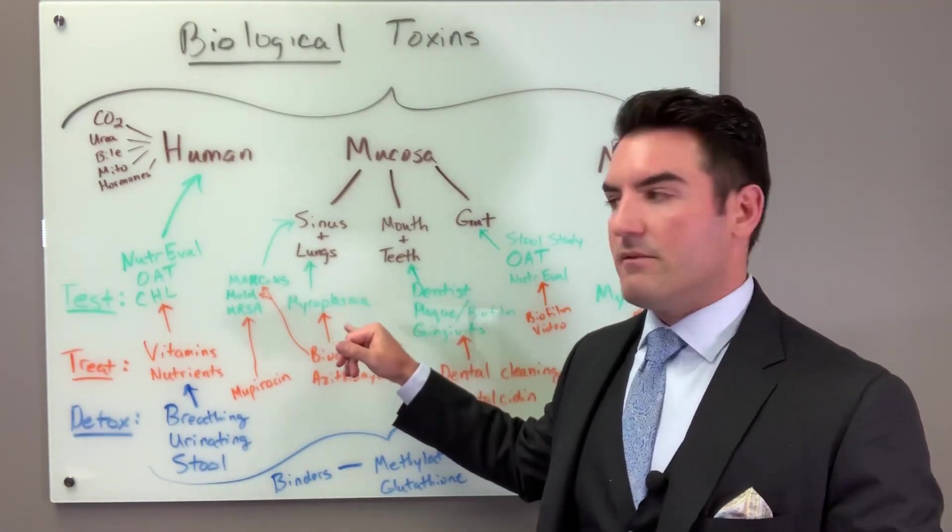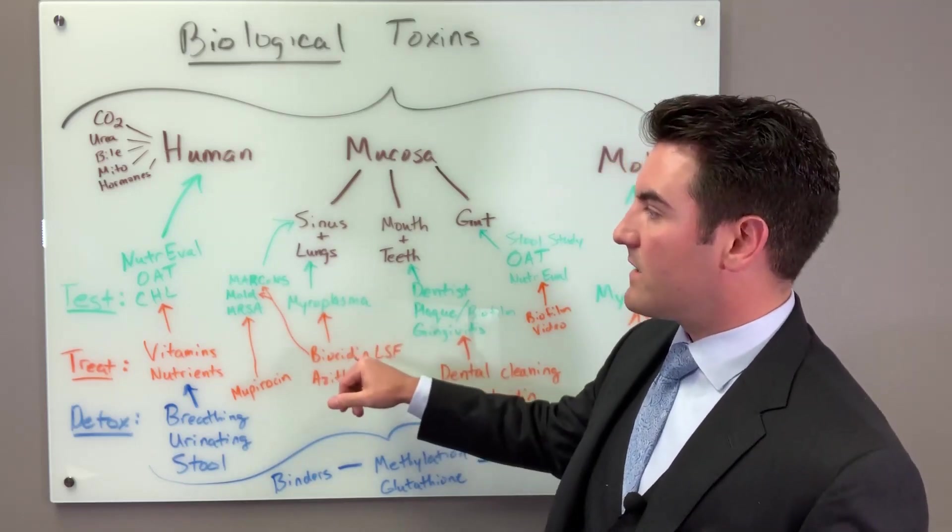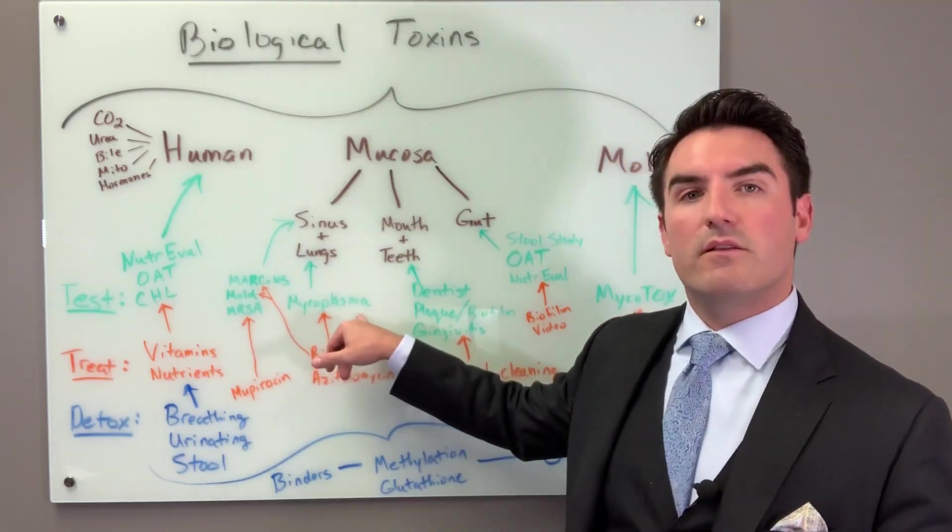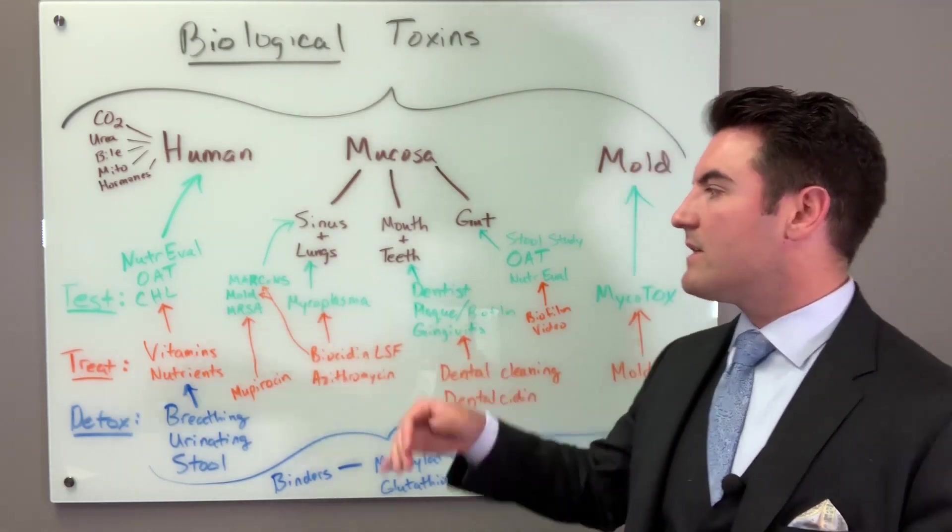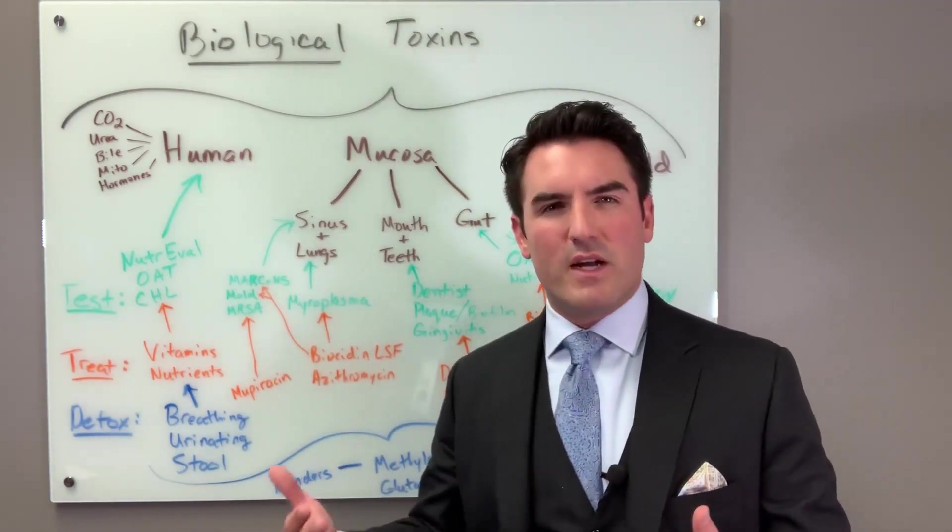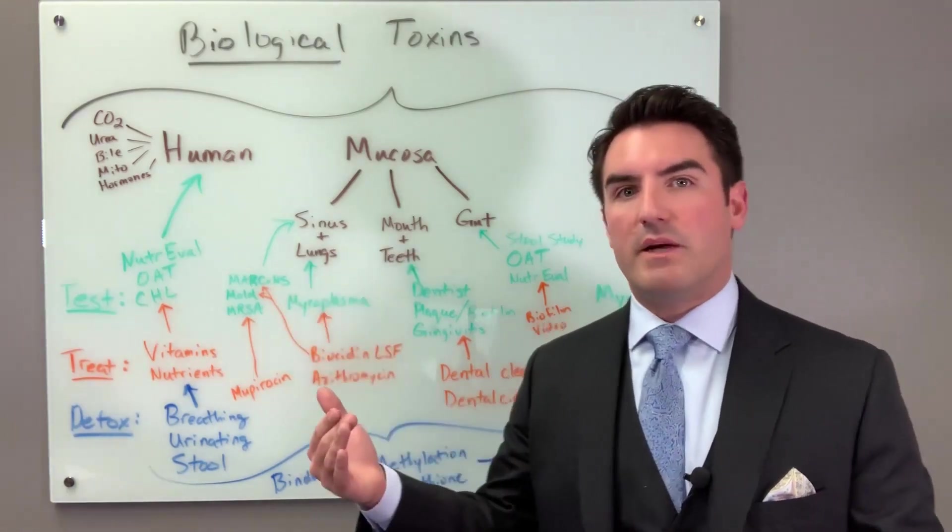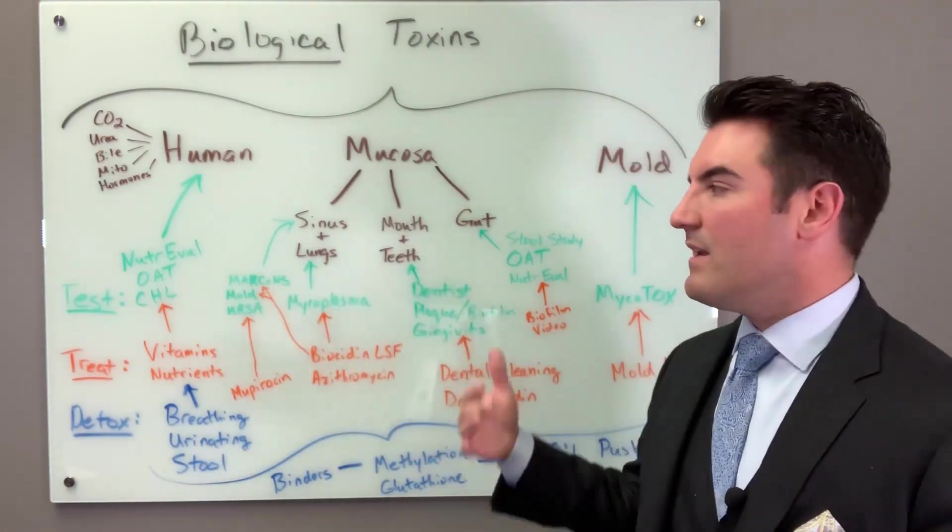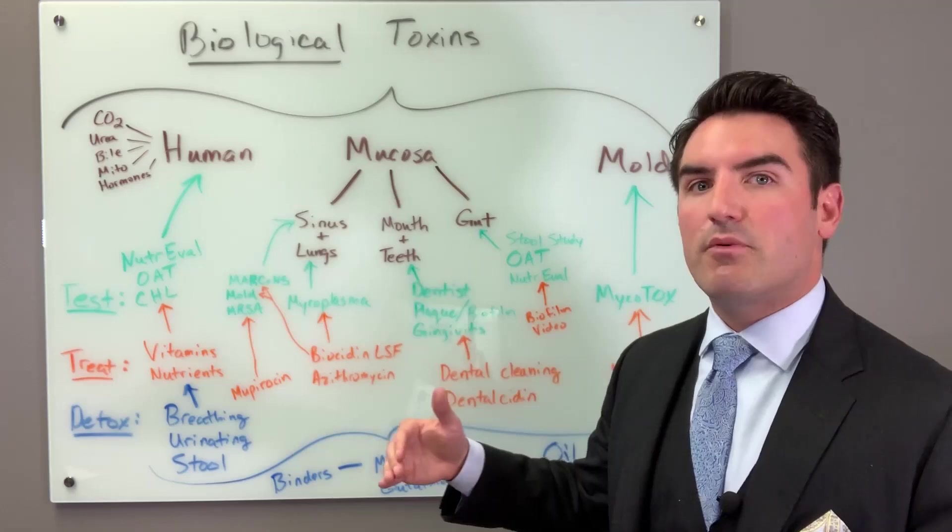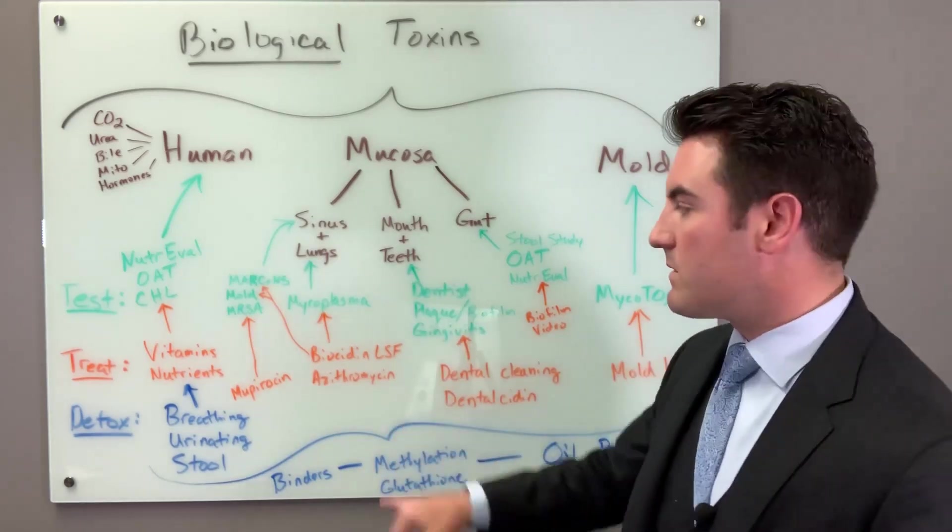If we can't get the mycoplasma levels down - and by the way, how we test for that, we test for that through blood, through IgM and IgG testing. I generally consider people, if their IgG levels over 1.5, I consider them as having a chronic infection. And then we treat them with Biocidin and see if it comes down. And then last but not least, if we're not making progress on it and they're still having those lung symptoms, we will actually use antibiotics.